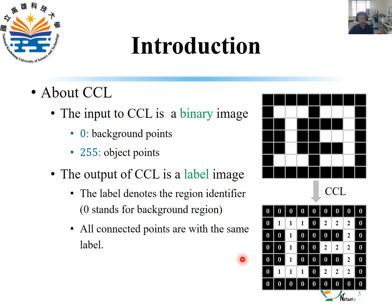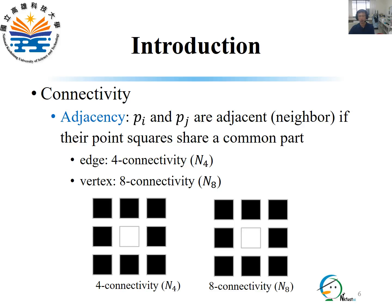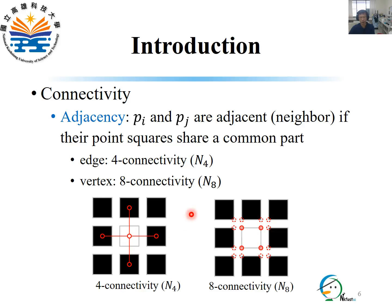Next, we define the connectivity of two points — that is, why PI and PJ are connected but PI and PK are not. Before defining connectivity between two points, we firstly introduce the idea of adjacency. Two points PI and PJ are called adjacent to each other if their point squares share a common part. If we define the shared part as an edge, the adjacent points of a specific point are its left, right, top, and bottom points, resulting in 4-connectivity. If the shared part is a vertex, the adjacent points are the 8 points around a specific point, resulting in 8-connectivity.